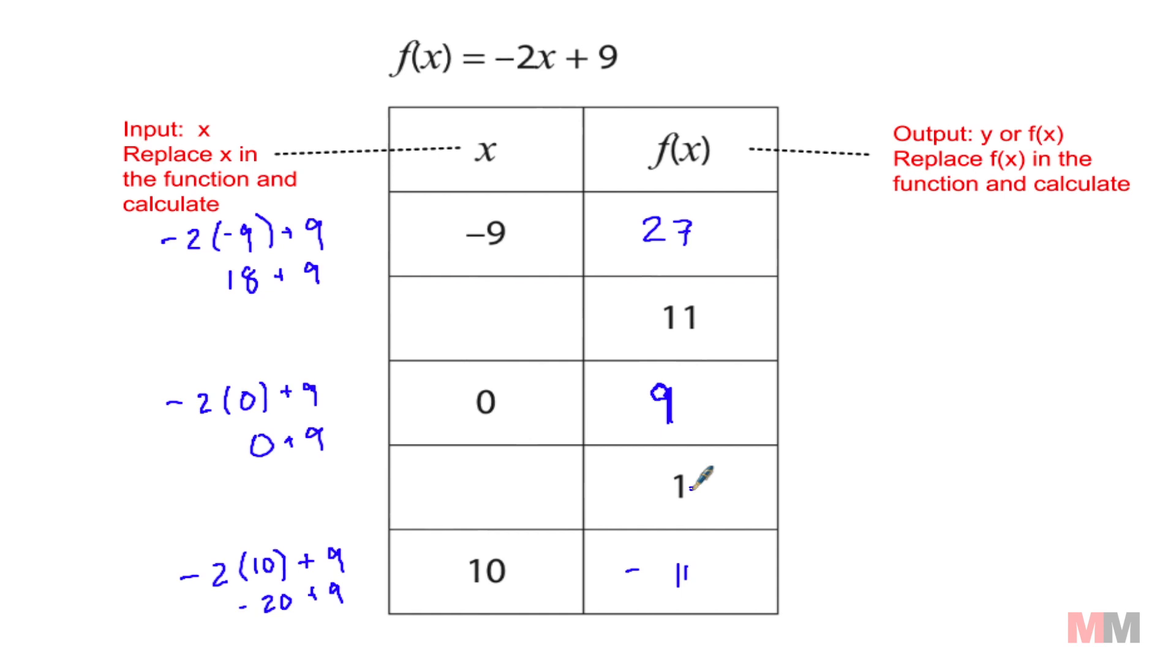When it's backwards, when you are given the y values, for instance, you're giving this 11 and 1, and you're trying to get x, then you just have to replace the output. You're replacing basically the y to solve for x. So when you are giving it the other way around, that usually involves solving for x, solving some kind of equation.